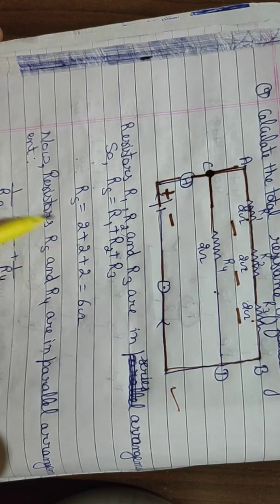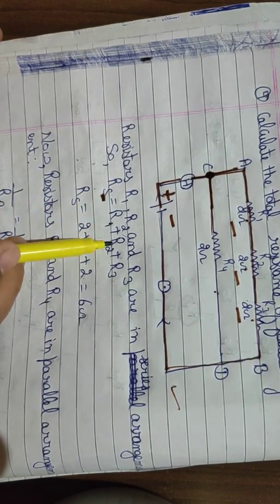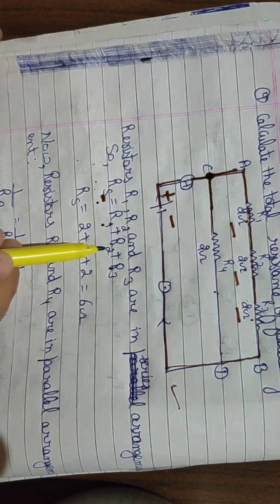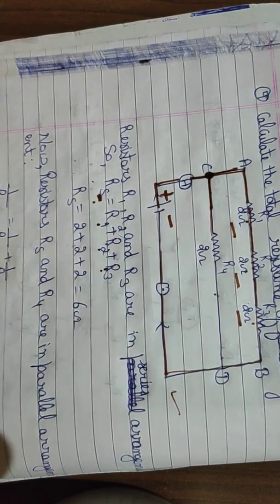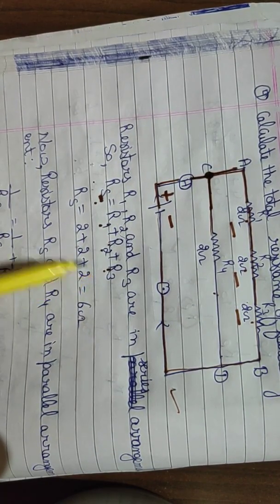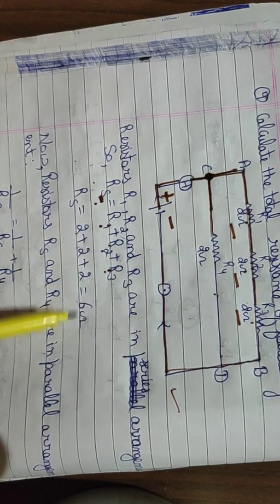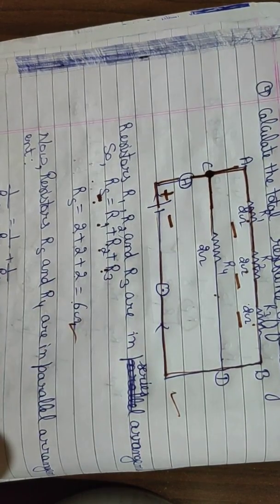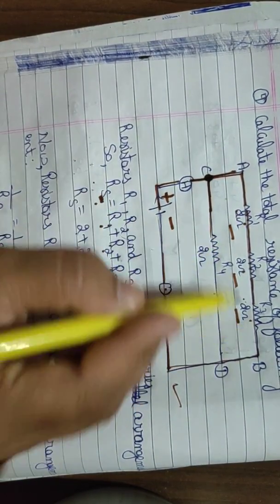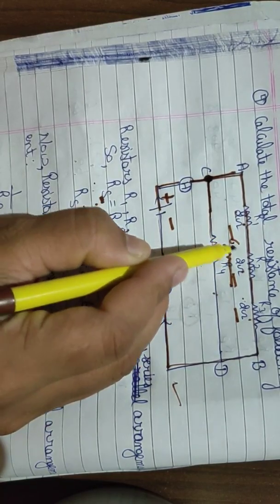In series, total resistance is the sum of individual resistances: Rs = R1 + R2 + R3. All three resistors have a value of 2 ohm each, so Rs = 2 + 2 + 2 = 6 ohm. After solving these three, we get one equivalent resistor of 6 ohm.